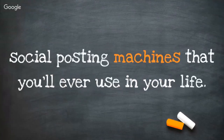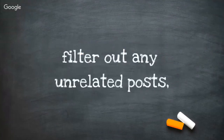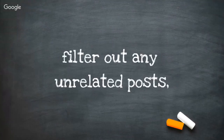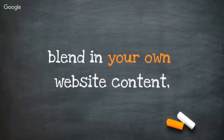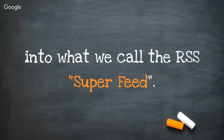Bradley teaches a great way to automate everything with IFTTT, and this is a match made in heaven — putting RSS feeds with IFTTT recipes. Within minutes, you can literally find the most popular RSS feeds on the internet based on any keyword and filter out unrelated posts. TMZ is one of my favorite RSS feeds to use because it has a lot of viral, engaging content that covers everything. But you want to filter it — it's like a fire hydrant; you just want to drink from the faucet. You want to blend in your own website content and mash them all together into what we call an RSS super feed.